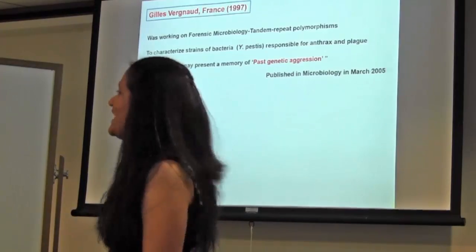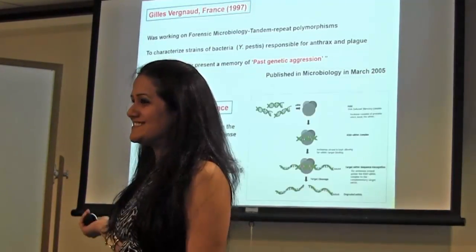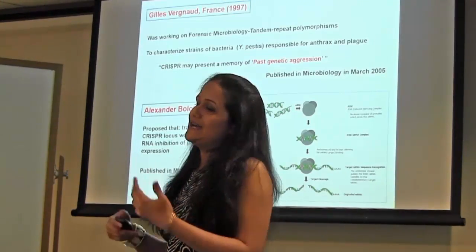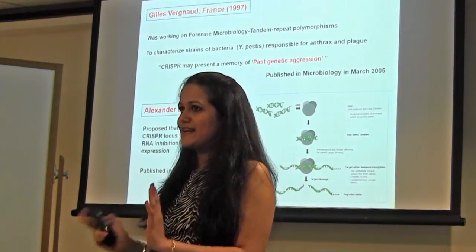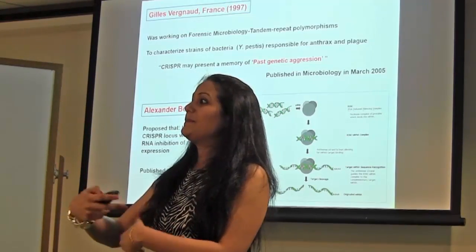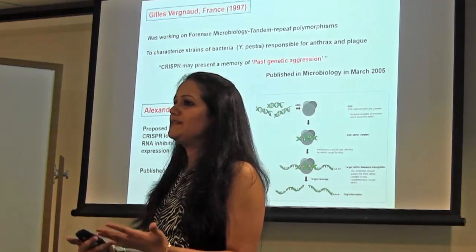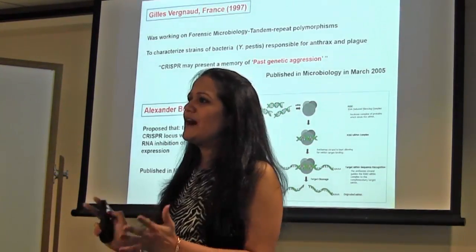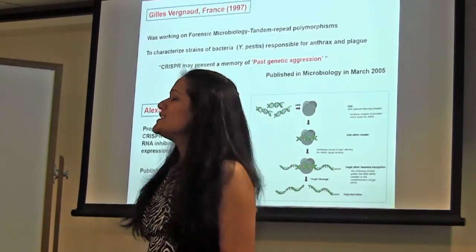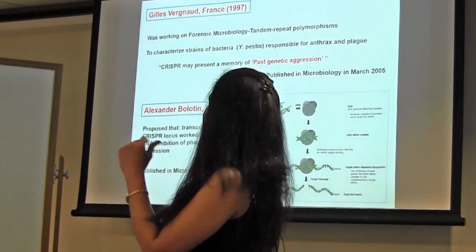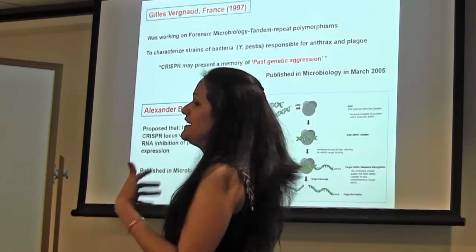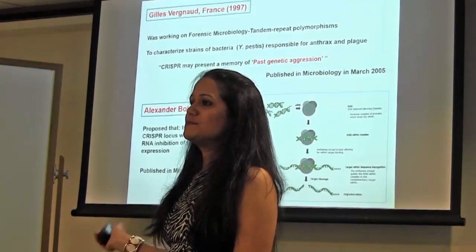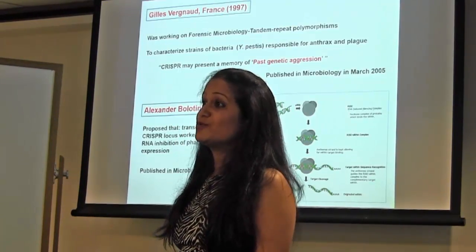Just a month later, another scientist from France, Alexandre Bolotin, had also observed the CRISPR loci. He went one step ahead and tried to explain the mechanism by which these CRISPR loci might be working. He proposed that the transcripts of the CRISPR loci work like RNAi — antisense RNA inhibition — to silence gene expression. However, in the near future, that was proved wrong.